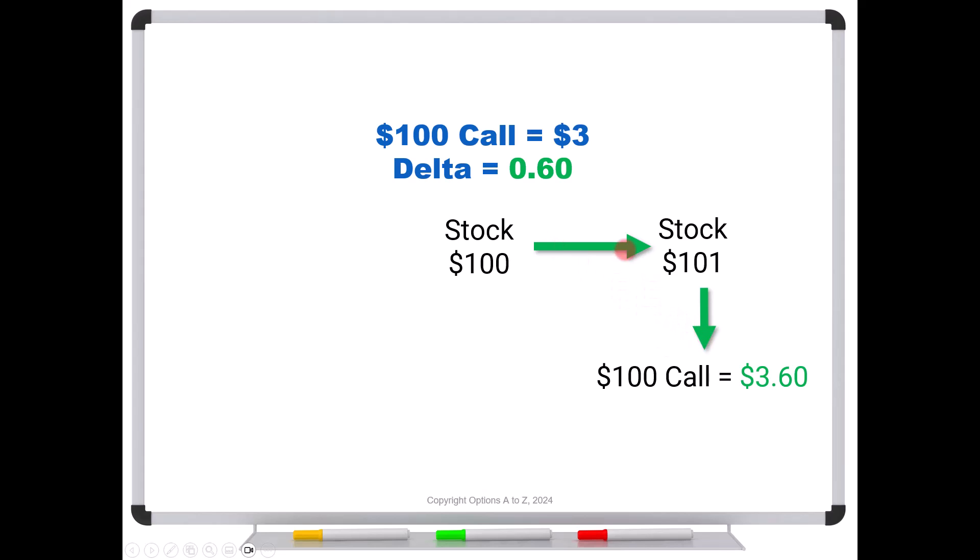Now it's also important to understand that this is assuming an instantaneous change in the stock price from 100 to 101. Because if it takes a full day or a week, well, obviously, that delta is going to change if for no other reason because of the passage of time. So we always have to assume that this is for an instantaneous change.